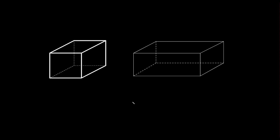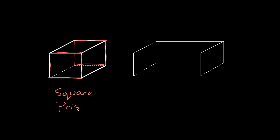Let's go over these two because they sometimes get mixed up. Starting with the one on the left: no curved lines or faces, all straight lines, so this is a polyhedron. Now to name it — you might be tempted to say the base is at the bottom, but remember, the bases can be on the sides. In this case we have a square right here and a square right here, so the bases are on the sides. Since the sides don't all meet at a single point and we have two congruent faces, this is a prism — specifically a square prism.